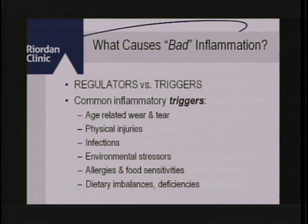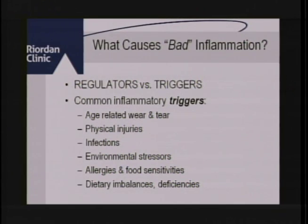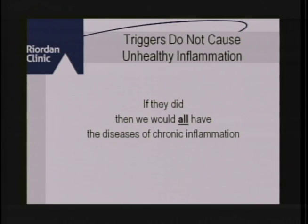We really need to understand the difference between regulators versus triggers. Common triggers that bring about arthritis include wear and tear, physical injuries, bad posture, infection, environmental stressors, toxins, allergies, and food sensitivities. We do a food sensitivity test here — the nightshades, for example, are a classification of foods known to trigger arthritis. But these triggers do not by themselves cause unhealthy inflammation. Not everyone who's exposed to these triggers gets arthritis. Why not?